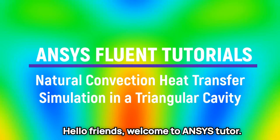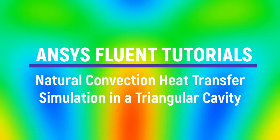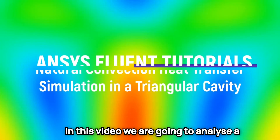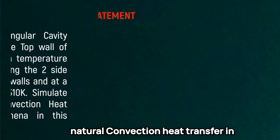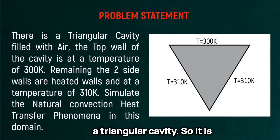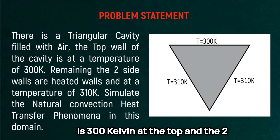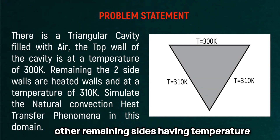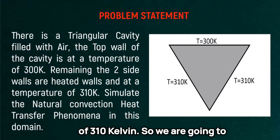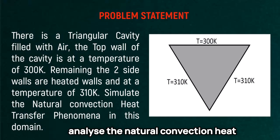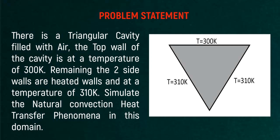Hello friends, welcome to ANSYS Tutor. In this video we are going to analyze a natural convection heat transfer in a triangular cavity. The cavity is filled with air, with one side at 300 Kelvin and the two remaining sides at 310 Kelvin. We are going to analyze the natural convection heat transfer inside it.